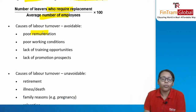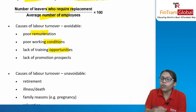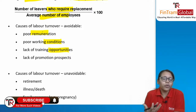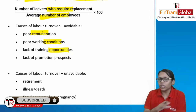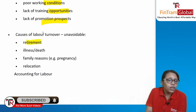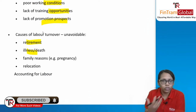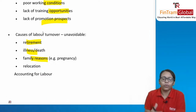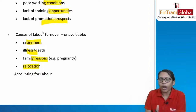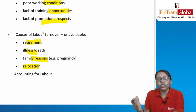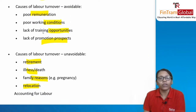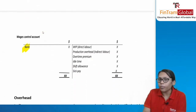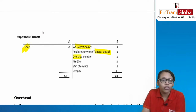In accounting for labor, the wages control account records: payments made (direct labor, indirect labor, overtime premium, idle time payment, shift allowance, and sick pay). Overhead refers to all indirect expenses — indirect material, indirect labor, and other indirect expenses — that cannot be directly identified with a specific cost unit or cost center. Production/manufacturing overhead relates to the production department; non-production overhead relates to selling, distribution, admin, finance, and research.